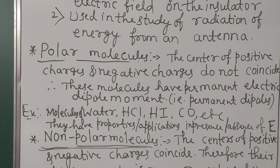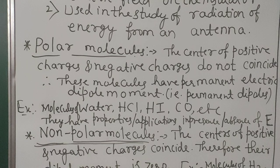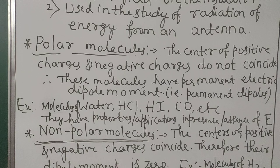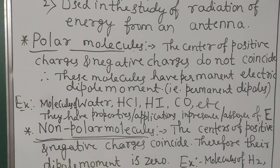These molecules have a permanent electric dipole moment. Whether electric field is present or not, they already exist as dipoles. The center of positive charges and negative charges do not coincide — they are well separated — and such molecules are called polar molecules. Examples: molecules of water, HCl, HI, CO, etc.